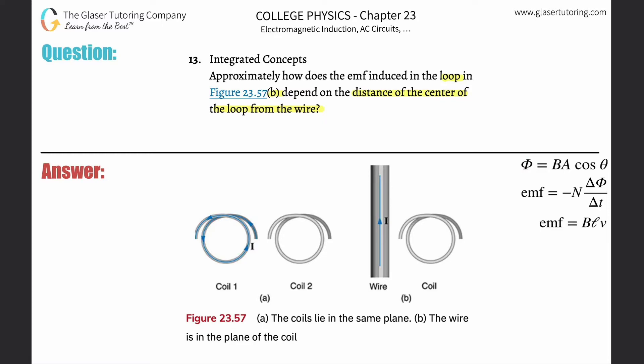As the wire moves away, the strength of this wire's magnetic field goes down. How does it go down? It goes down according to this function from the other chapter, Chapter 22.